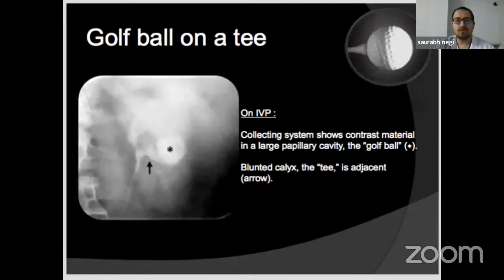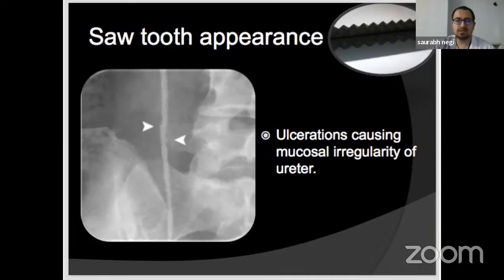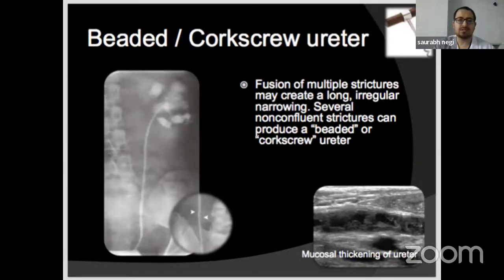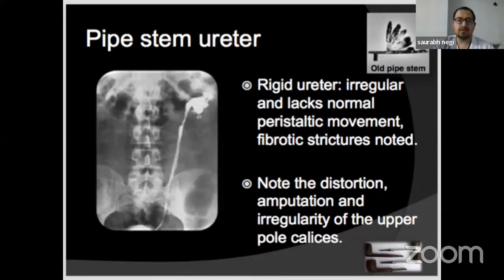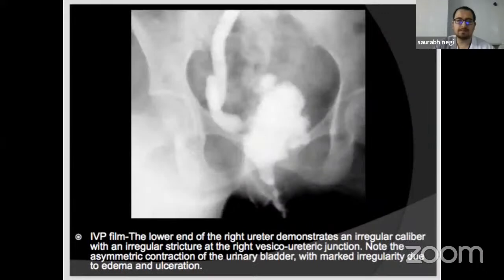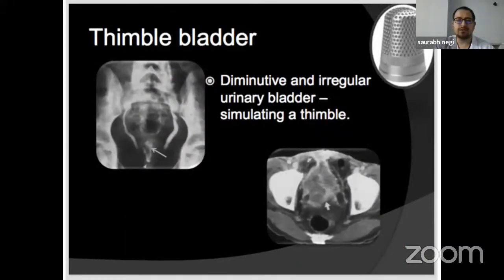Another IVU film shows a large papillary cavity near the blunt calyx, giving a golf-ball-on-tee appearance. This ureter image shows irregular ulcerations — saw-tooth appearance. Multiple ureteric strictures create a long, irregular, narrow ureter appearing as a beaded and corkscrew appearance. A rigid ureter with irregular appearance and lack of normal peristalsis with fibrotic strictures appears as a pipe-stem ureter. This IVU shows an irregular contracted bladder with irregular right VUJ strictures, and another image shows a diminutive, severely contracted bladder — the thimble bladder.